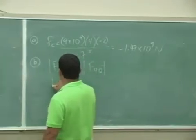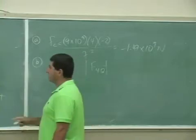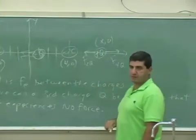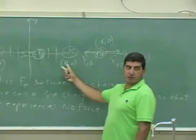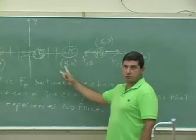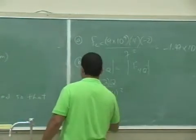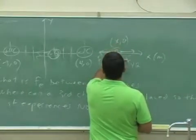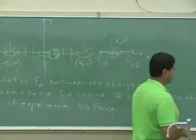So F2Q is K times 2 times Q divided by the distance between this guy and this guy, squared. So that's what? X minus 4 squared, quantity squared. So this is X, the distance between here and here is X minus 4, quantity squared.